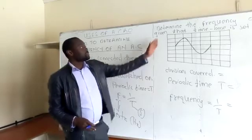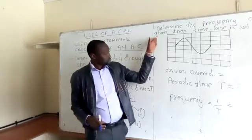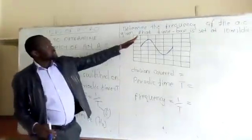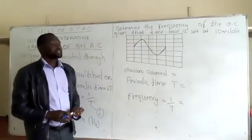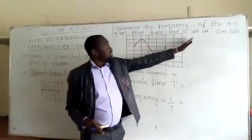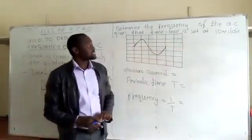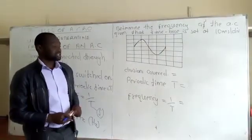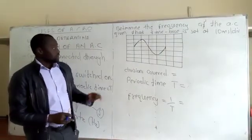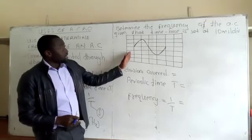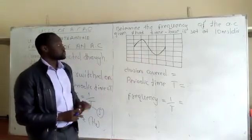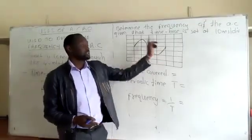For example, we want to determine the frequency of an alternating current given that the time base is set at 10 milliseconds per division. We can see the time base has been set to produce just one wave.